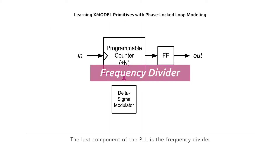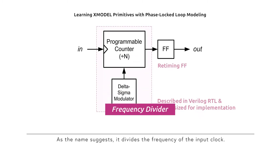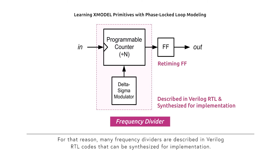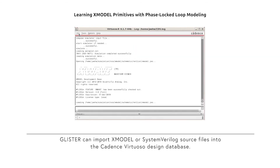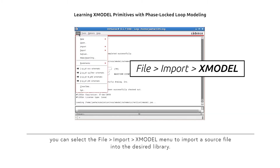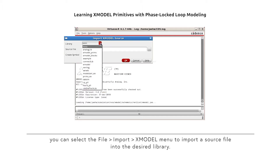The last component of the PLL is the frequency divider. As the name suggests, it divides the frequency of the input clock. A frequency divider is basically a digital counter and is often made programmable. For that reason, many frequency dividers are described in Verilog RTL code that can be synthesized for implementation. Glister can import X-Model or SystemVerilog source files into the Cadence Virtuoso design database. From the Command Interpreter window, you can select File, Import, and X-Model to import a source file into the desired library.